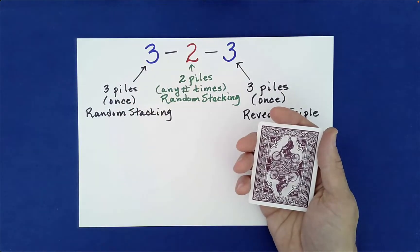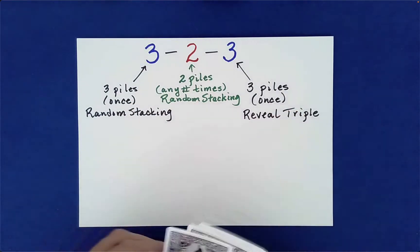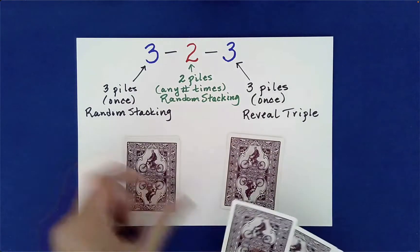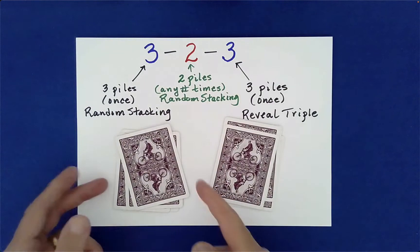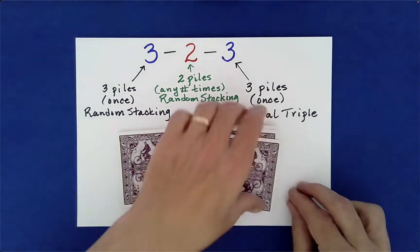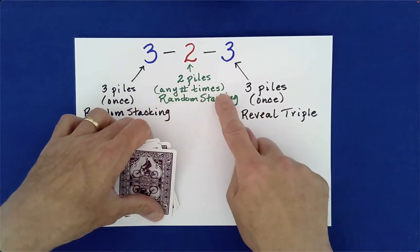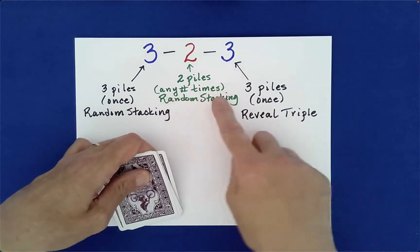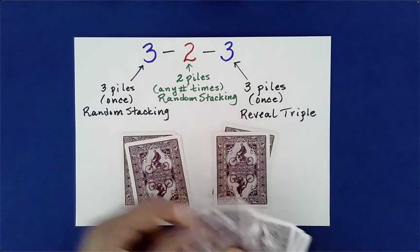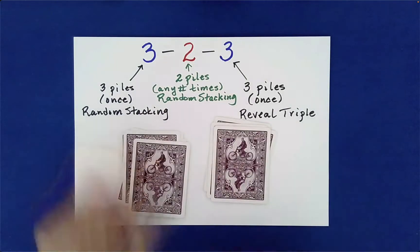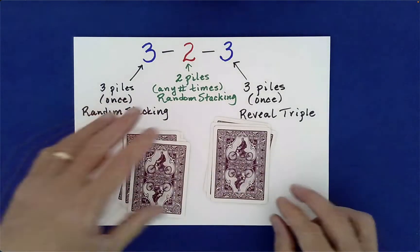Now two. What this is reminding us of is we can actually deal into two piles with random stacking as many times, any number of times at all. So we can do this as many times as we like. The spectator could actually do this and then they can decide how to stack these.